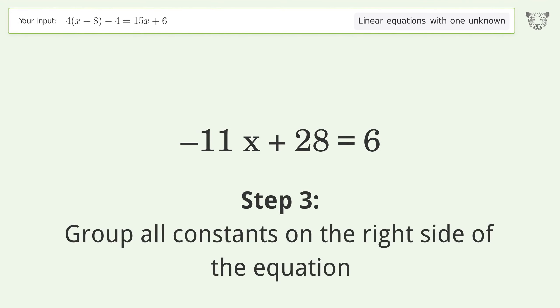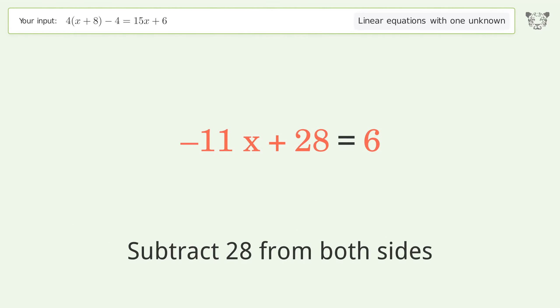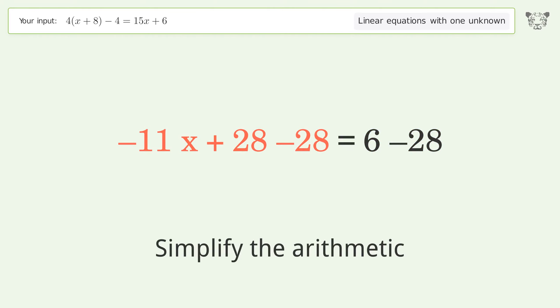Group all constants on the right side of the equation. Subtract 28 from both sides, then simplify the arithmetic.